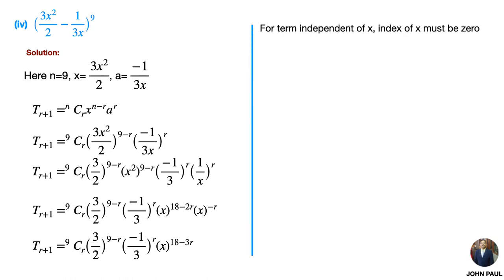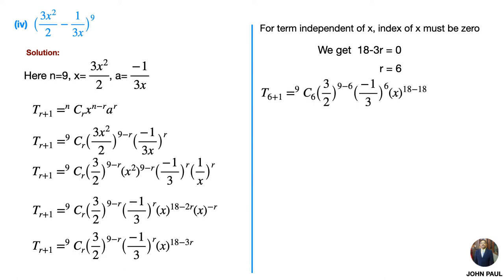For the term independent of x, the index of x must be 0, that is 18 − 3r = 0. By simplification we get r = 6. Substituting r = 6, we get 9C6 · (3/2)^(9−6), which can be directly simplified as (4³/3^(−3)) — that is (3/2)³.